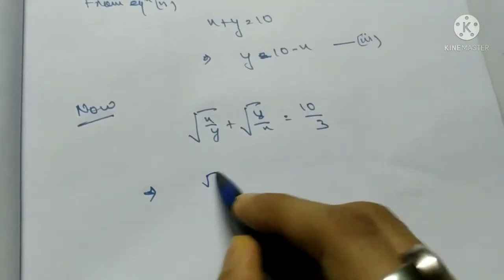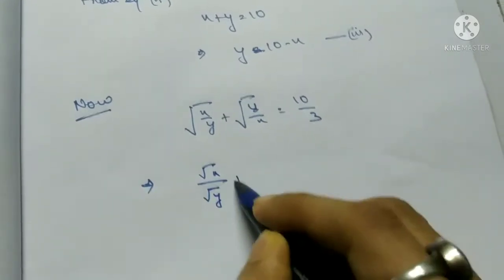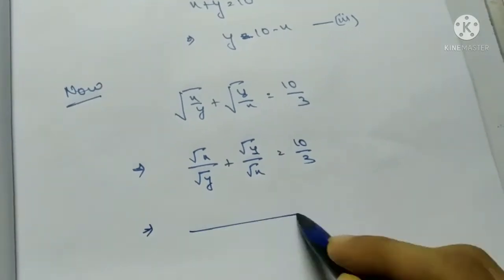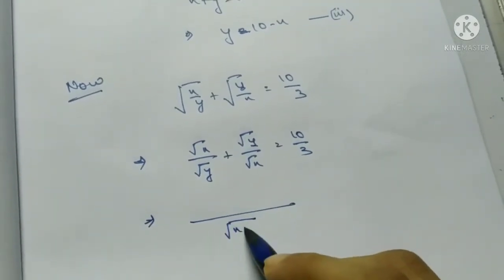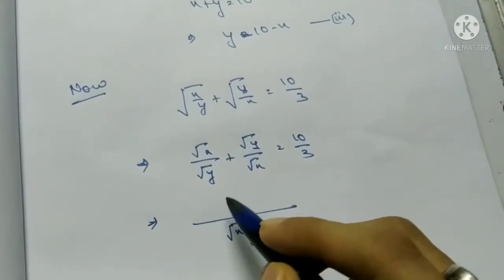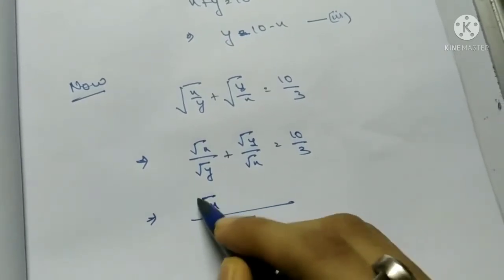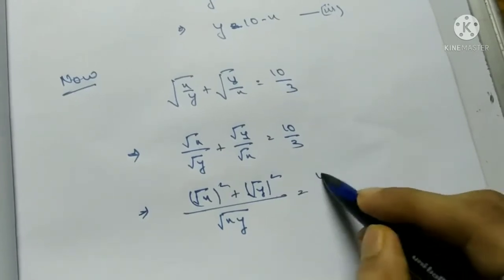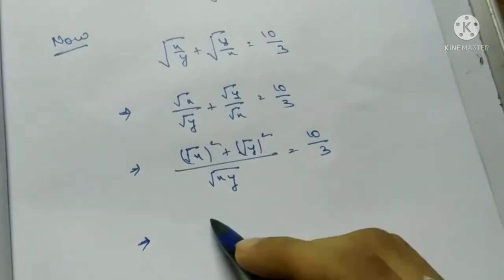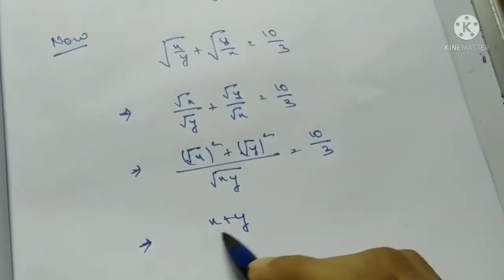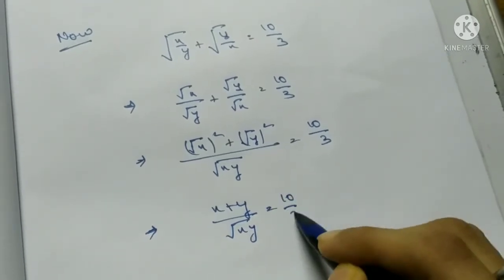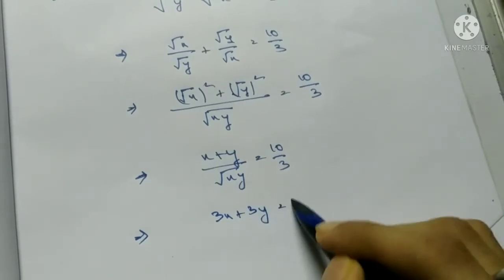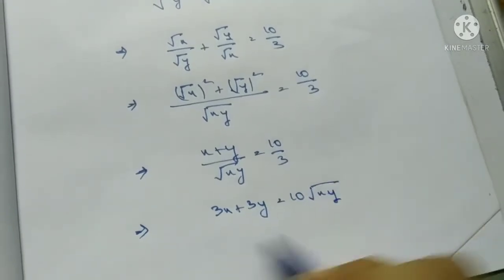Rewriting equation 1: √x/√y plus √y/√x equals 10/3. Taking LCM √xy: (x plus y)/√xy equals 10/3. Cross multiplying: 3(x plus y) equals 10√xy.